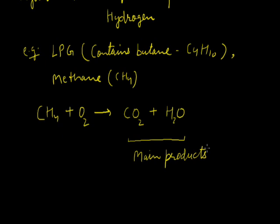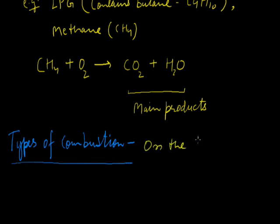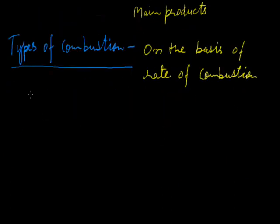Types of combustion: on the basis of rate of combustion, combustion can be divided into two categories. The first is rapid combustion — combustion in which a large amount of heat and light energy is released in a very short span of time. Examples are combustion of LPG and combustion of natural gas.